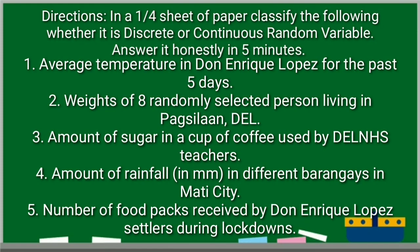Directions. In a one-fourth sheet of paper, classify the following whether it is discrete or continuous random variable. Answer it honestly in five minutes.